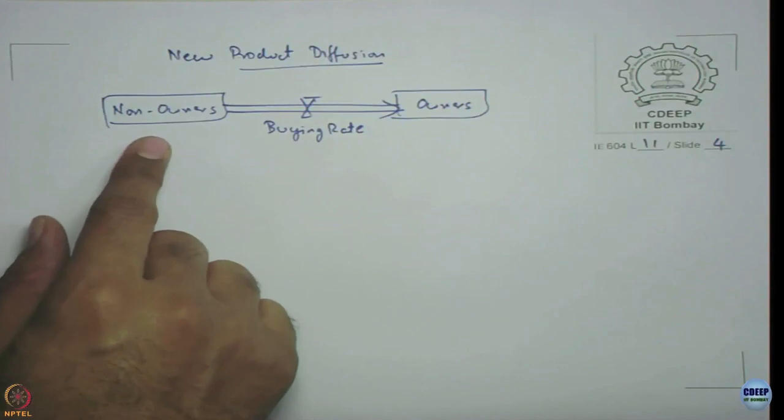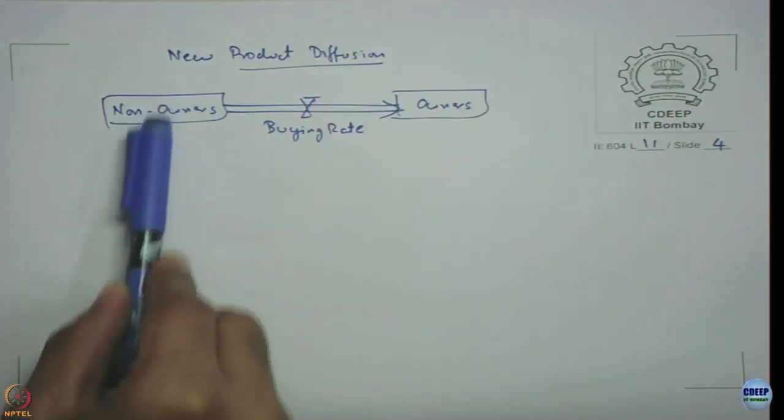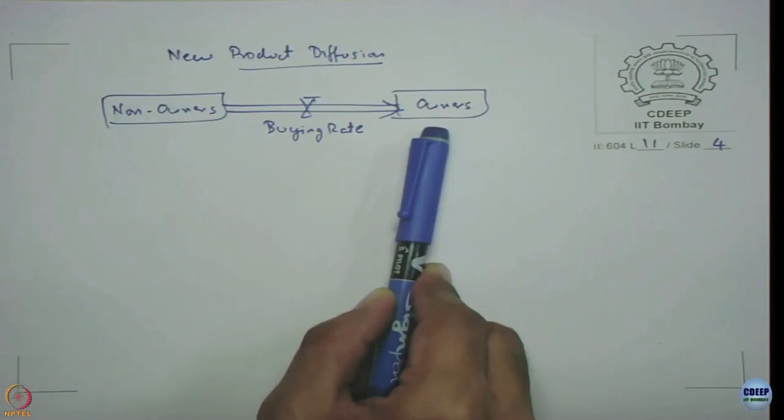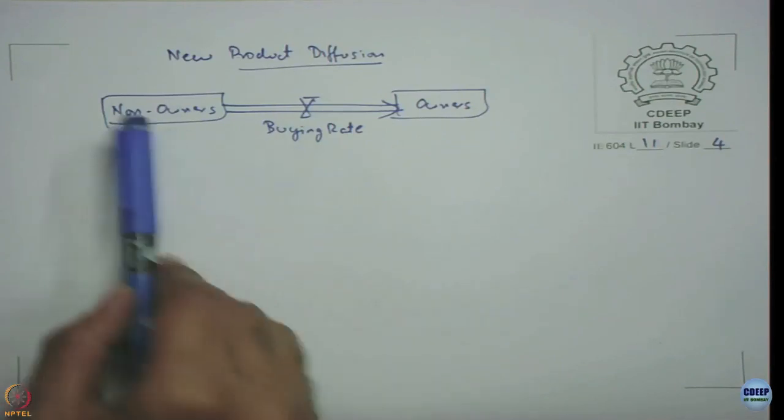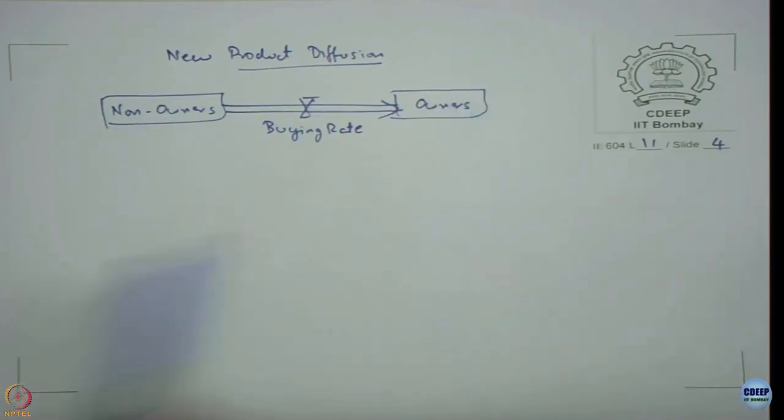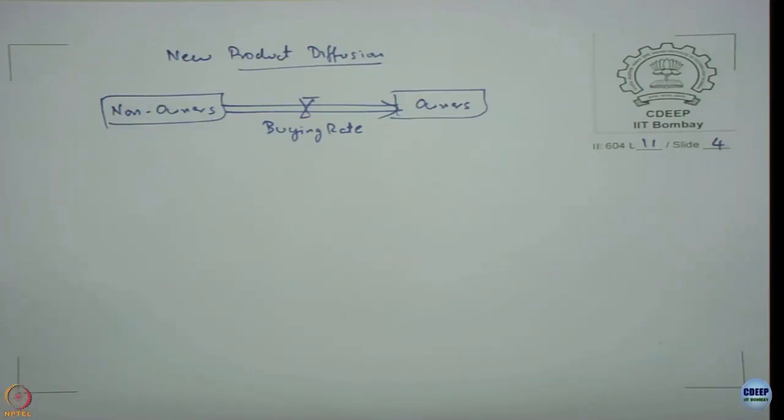Another you can observe is as I told in stocks matter is conserved. Whoever non owners gets depleted here the same amount get increased here as owners. Matter is conserved if 5 people buy it that week then non owners reduces by 5 that week owners get increased by 5 the same that week. Non owners starts with an initial value because owners will also start with some initial value and as buying rate increases non owners are going to fall down as buying rate increases owners are going to increase simple system that we have.